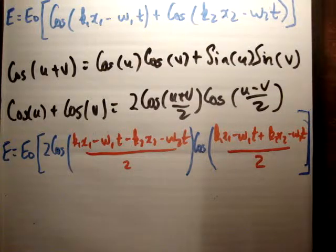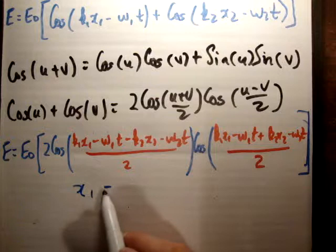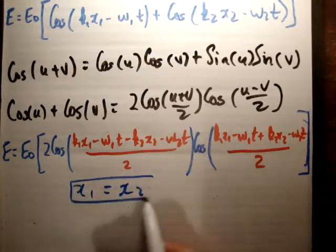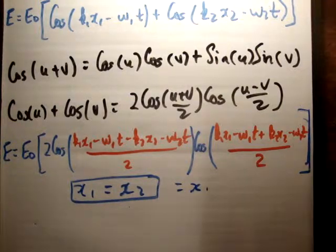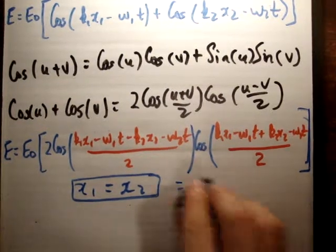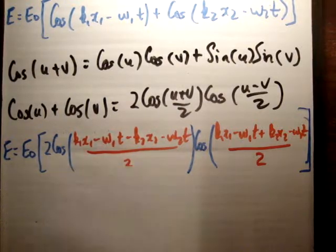Alright, so I'm now going to say that the positions are the same, x1 is equal to x2, because these are two waves which are superposing. So I'm going to say x1 now is equal to x2, and as a result I'm just going to say is equal to x. I'm no longer going to give it a subscript. And of course time is the same, but that's kind of a given.